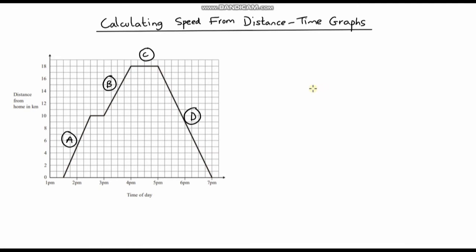Hello, welcome to another video on distance-time graphs. In this video we're going to be focusing on calculating the speed travelled at different stages of the journey. This graph here represents a journey someone's taken. They left home at 1:30, travelled 10 kilometres, stopped for a period of time, then travelled another 8 kilometres to reach 18 kilometres from home. They had another rest and then came back, arriving home at 7 o'clock in the evening. Our job is to calculate the speed at different stages of the journey.